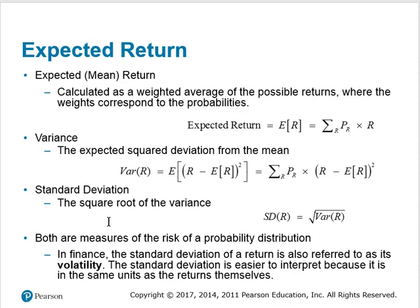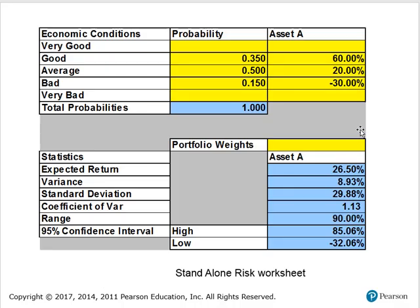Standard deviation is a little bit easier to interpret because it is in the same units as returns. With variance, you're squaring the returns, so the correct label is percent squared — and such a thing doesn't really exist. When you take the square root it puts it back in the same units as returns. Here is our example: these are the returns and probabilities, which are entered in what's referred to as the standalone risk worksheet.